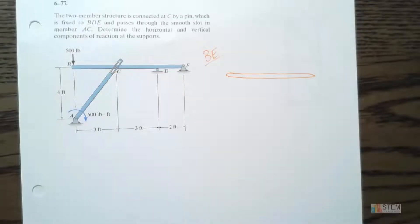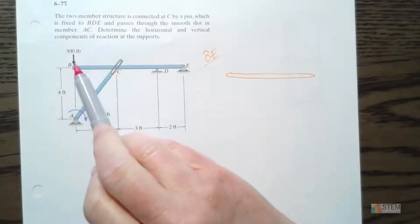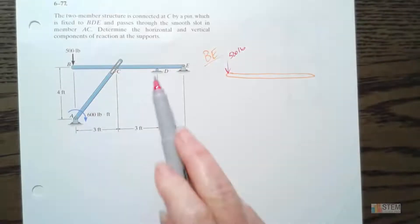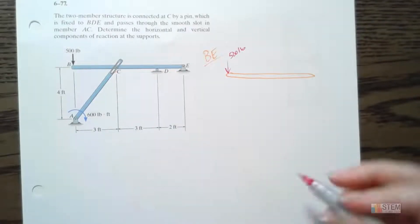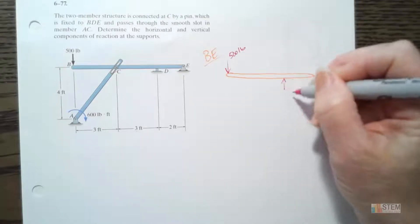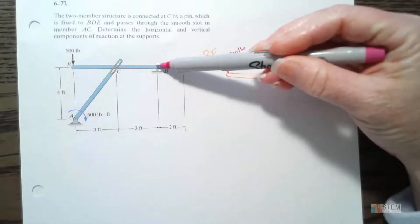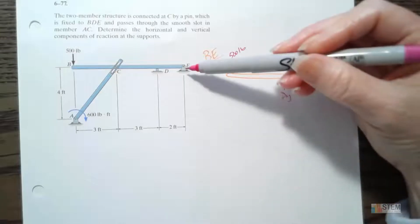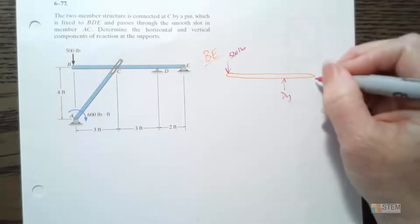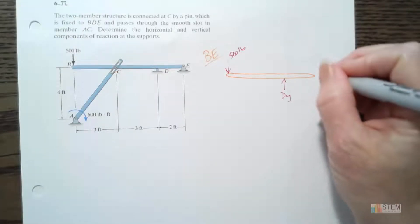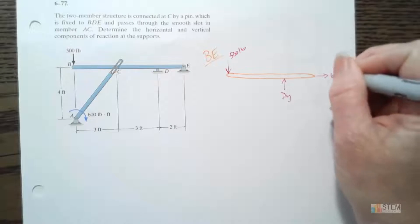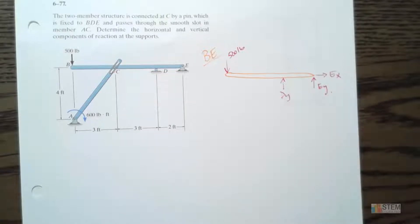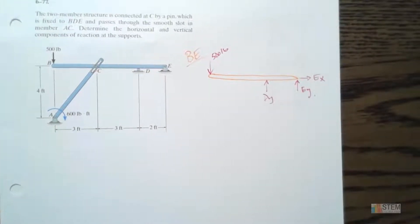Let's draw the member and put the forces on here. We've got this external force of 500, so let's put that on. At D there's a roller, which is just going to push back up, so let's call that DY. At E there's a pin, which prevents translation in X and Y, so we have EX and EY. I'm just assuming the positive direction here — I don't know if those are positive or not yet.